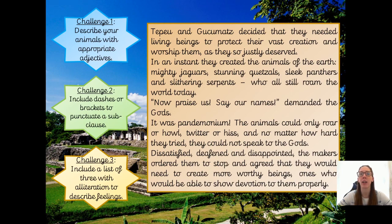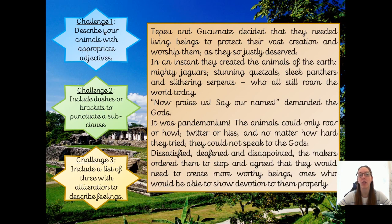Let's look at the challenges for this paragraph. Challenge one — can you describe your animals with appropriate adjectives? Remember, one well-chosen adjective will do the job of three — you don't need a whole list. Challenge two — can you include dashes or brackets for your subordinate clause? We know we can punctuate subordinate clauses with commas, dashes, or brackets — we often use commas, so challenge yourself to use a dash or bracket. Challenge three — can you include a list of three words in a row with alliteration — same starting letter or sound — to describe the feelings of the gods?